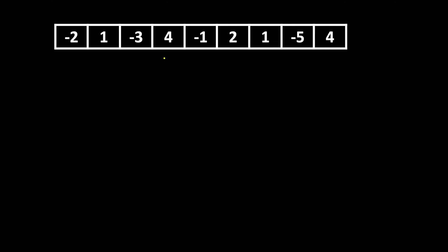The job is to find a subarray whose sum is maximum. In this case, the sum is 4 minus 1 plus 2 plus 1 which equals 6, so you cannot find any subarray whose sum is more than 6. Let's see what the algorithm is to do so.